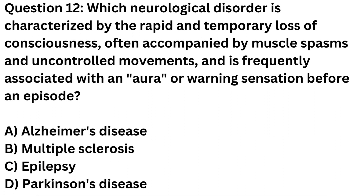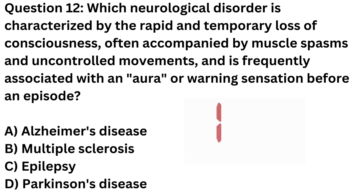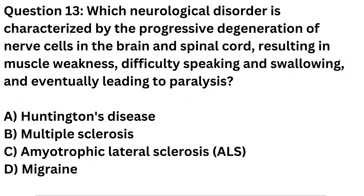Question 12. Which neurological disorder is characterized by the rapid and temporary loss of consciousness, often accompanied by muscle spasms and uncontrolled movements, and is frequently associated with an aura or warning sensation before an episode? a. Alzheimer's disease. b. Multiple sclerosis. c. Epilepsy. d. Parkinson's disease. Correct answer: c. Epilepsy.